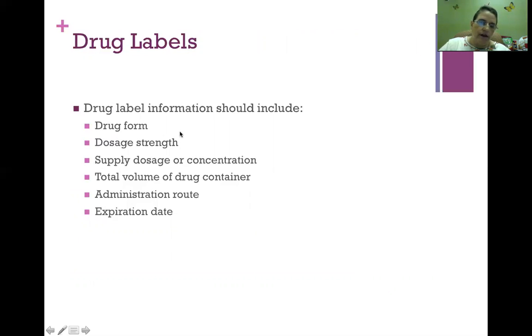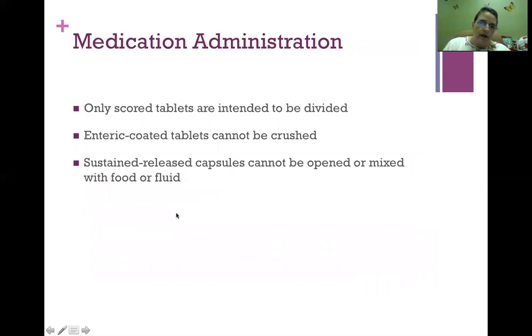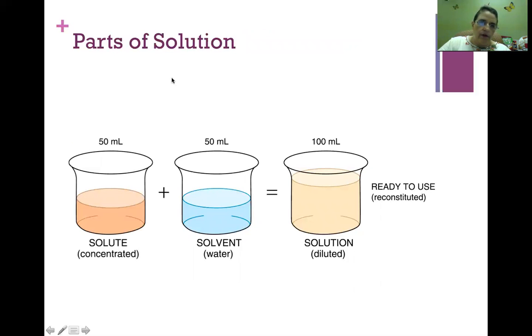We also need to look at the drug itself and look for correct information on the label. We're looking for the drug form, the dosage strength, the supply dosage or concentration, the total volume in the drug container, especially if it's a multi-dose container, the administration route, and the expiration date. Remember that when you're doing medication administration, sometimes we have to split tablets. Only a scored tablet is intended to be divided. If it's an enteric coated tablet, it's not intended to be divided or crushed. That enteric coating is on there so that it will not be metabolized until it is later in the gastric system. If you have a sustained release capsule, it's not to be opened or mixed with food or fluid. Again, it's intended to hit the system a little bit later in the gastric system.